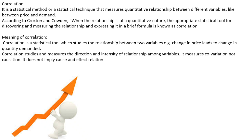So, if we come to the language of correlation — what is correlation? It is a statistical tool which studies the relationship between two variables. For example, if prices change, then demand also changes. How much will it change? How will it change? When we measure and mention that in quantitative terms, that statistical tool is known as correlation.